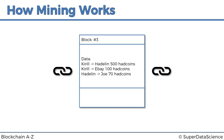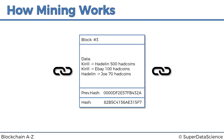Also in the block we have a field for the previous hash — the hash of the previous block. This is a very important feature of blockchains because that's how the cryptographic link is facilitated between them. Without this field the blockchain wouldn't be a blockchain. Finally, we have a field for the hash of the current block. We take the block number, the data, and the previous hash, put all of that into a hashing algorithm, and it spits out a hash for us.